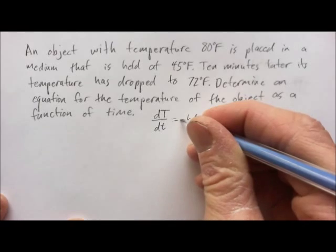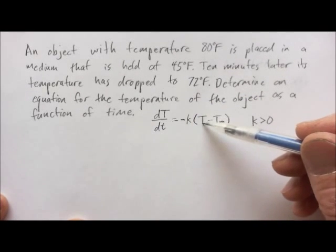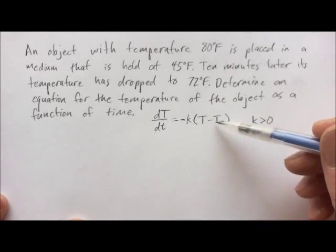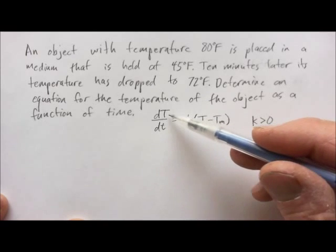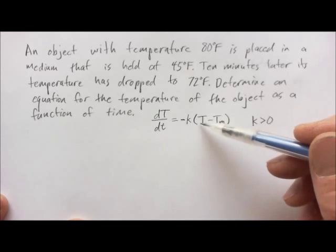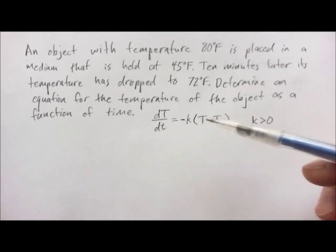So, let's put a minus sign in here. And then let's ask ourselves, what if the temperature of the object was less than the temperature of the medium? Then this would be negative. We'd have a negative times a negative, and our rate of change would be positive, which would make sense. If our object's temperature is less than the object of the medium, then the object should be warming up.